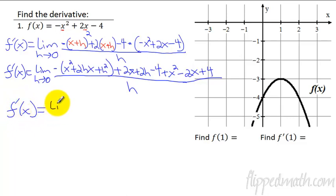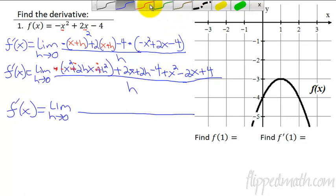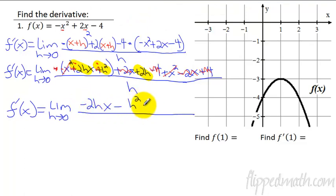Plus x squared minus 2x. I'm distributing the negative here. Make sure you distribute that negative plus 4, all over h. You can start combining some things. The negative distributes, and then let's start to cancel. Negative x squared and x squared, those two things are going to cancel. This 2x cancels with the minus 2x. This minus 4 cancels with the plus 4. I've got the negative 2hx, minus h squared, and plus 2h.